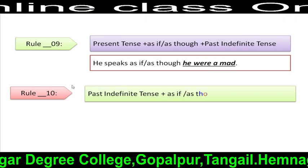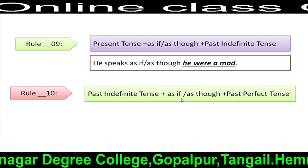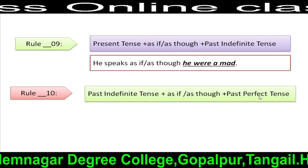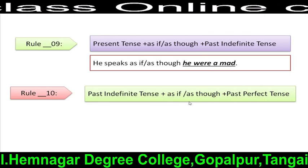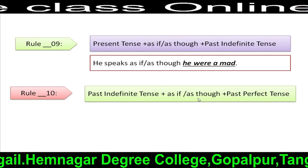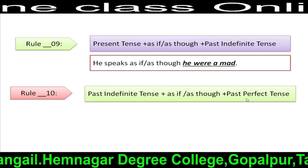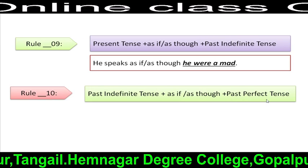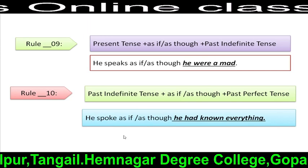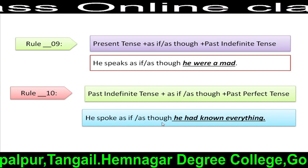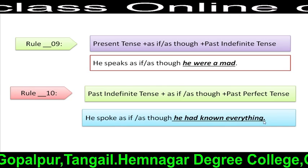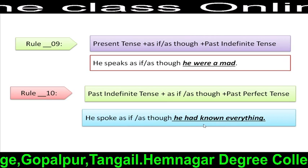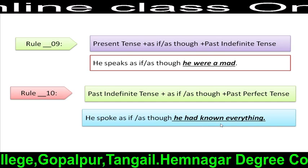Rule 10: Past tense + as if/as though + past perfect tense. That means, after 'as if' or 'as though', we have to use past perfect tense to complete the incomplete sentence. For example: 'He spoke as if or as though he had known everything.' Here, 'he had known everything' is an example of past perfect tense.